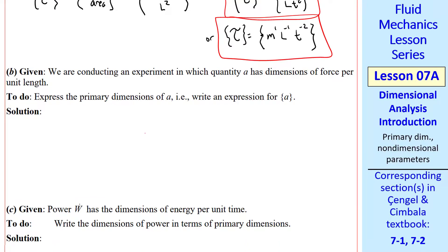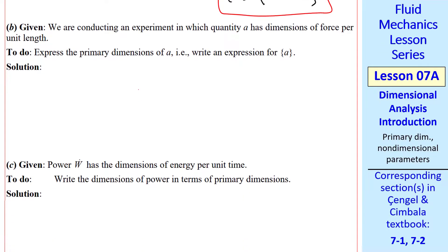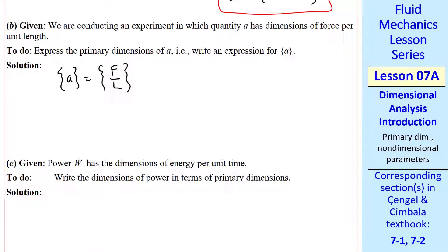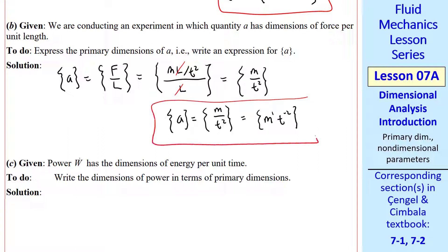Let's do the same thing with some quantity A that has dimensions of force per unit length. The dimensions of A are force per length, which are primary dimensions ML over t squared, and then another L in the denominator. The L's cancel. So the primary dimensions of A are M over t squared, or M to the 1 t to the minus 2.